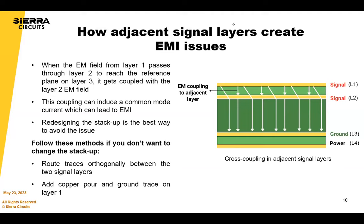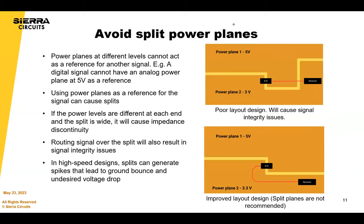Routing signals over a split plane will also cause signal integrity issues. If you need to route a signal on the power plane, make sure the trace is not passing through the split, as shown in the image.